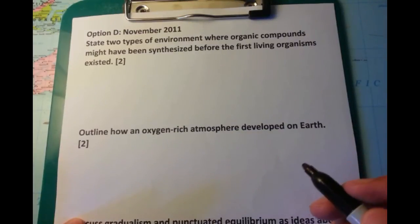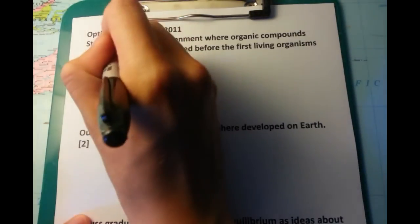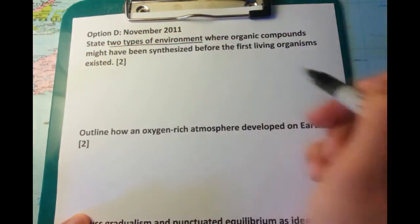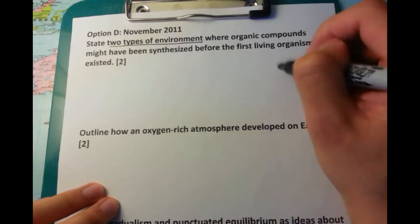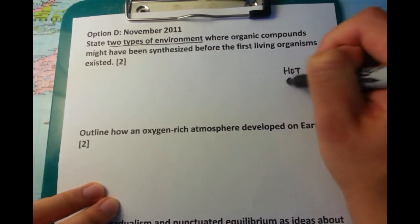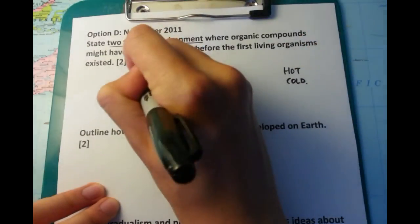State two types of environment where organic compounds might have been synthesized before the first living organisms existed. This two mark question really refers to two main types of environment, and I divide it into hot versus cold environments.